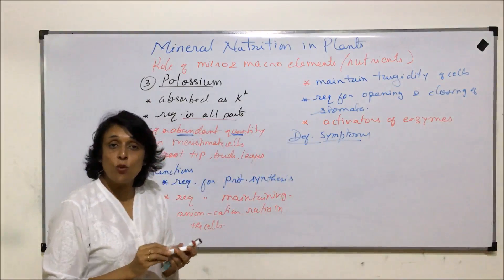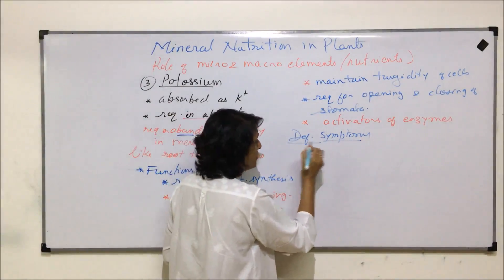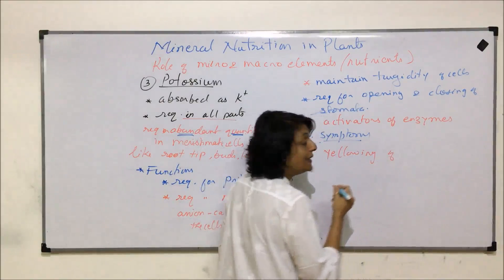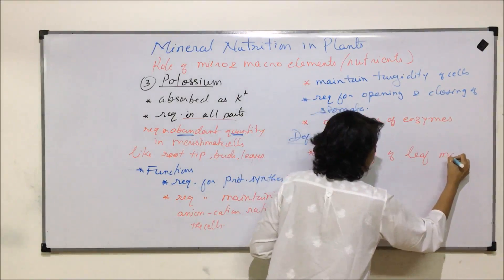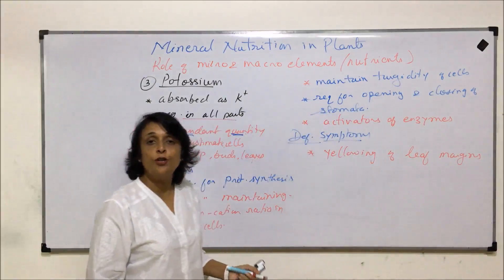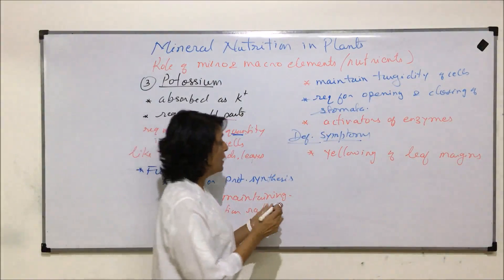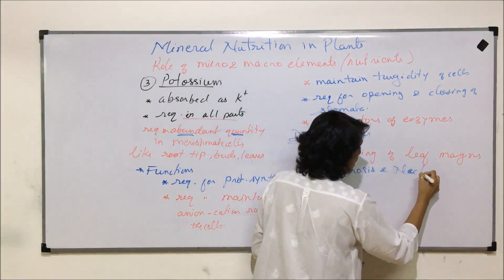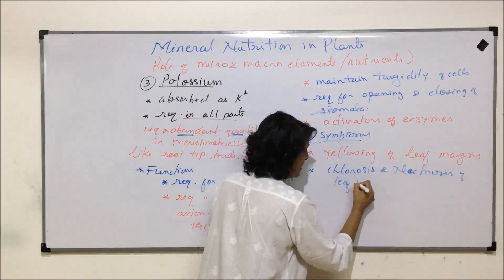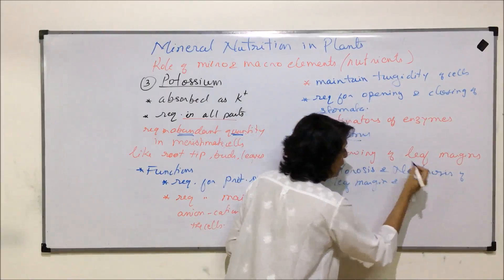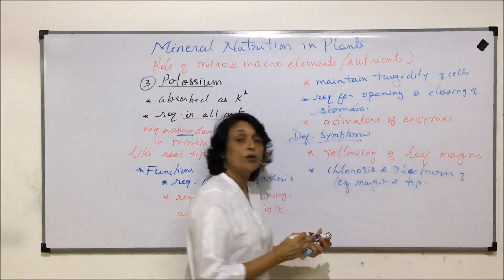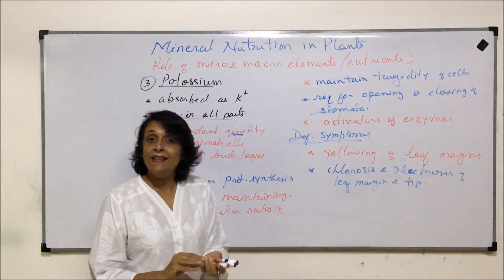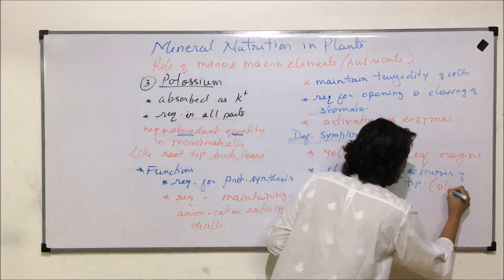Deficiency symptoms of potassium: the first symptom is yellowing of leaf margins — the entire leaf may not turn yellow, but only the margin starts to become yellow. This is followed by chlorosis and then necrosis of the leaf margin and tip. Chlorosis is loss of pigment and necrosis is death of tissue. This is seen especially in older leaves.